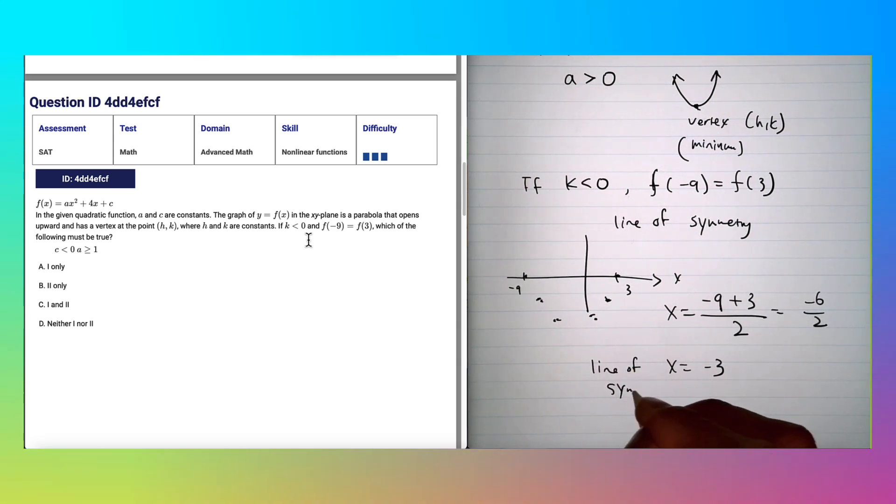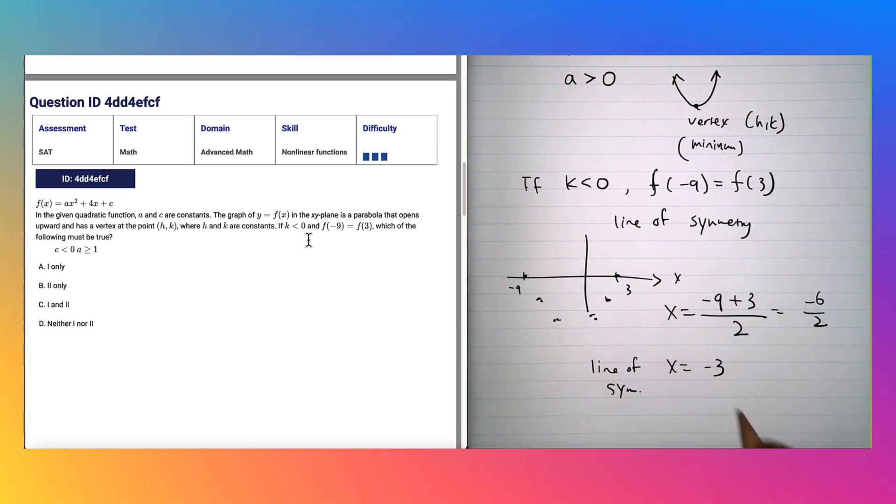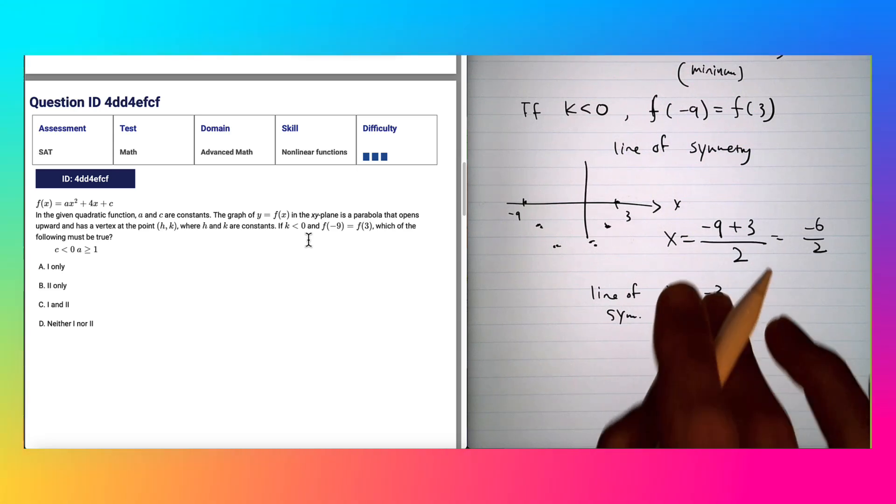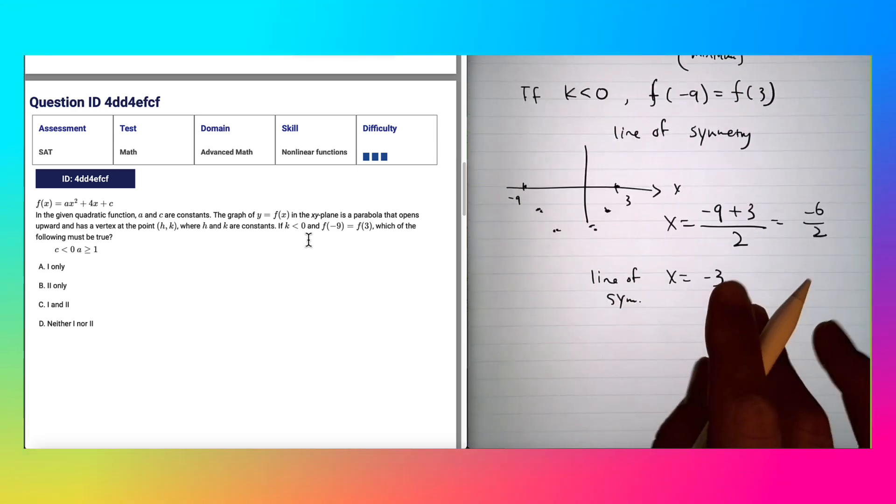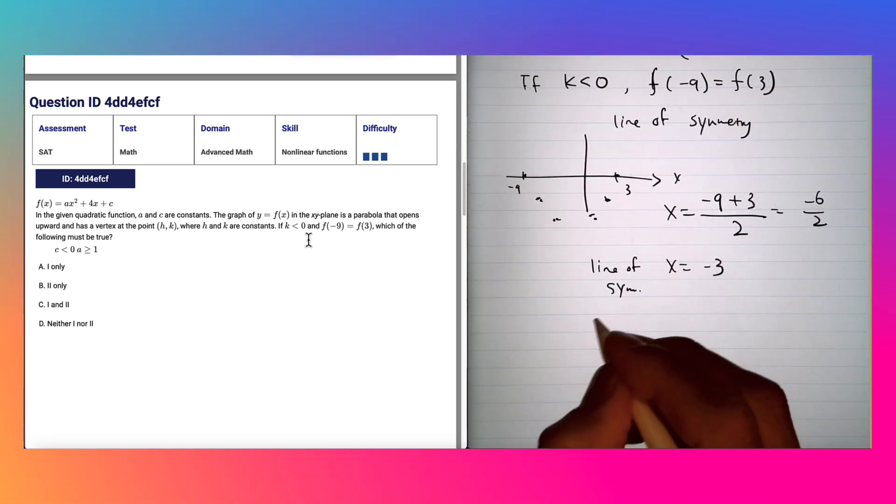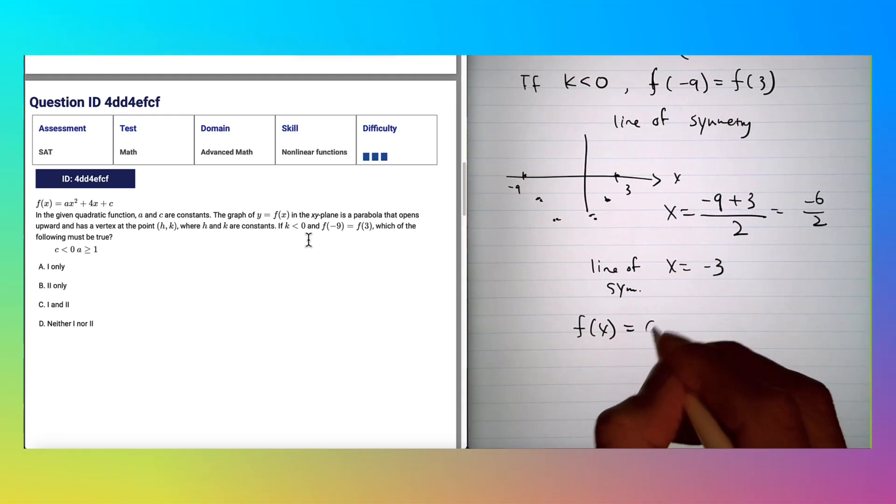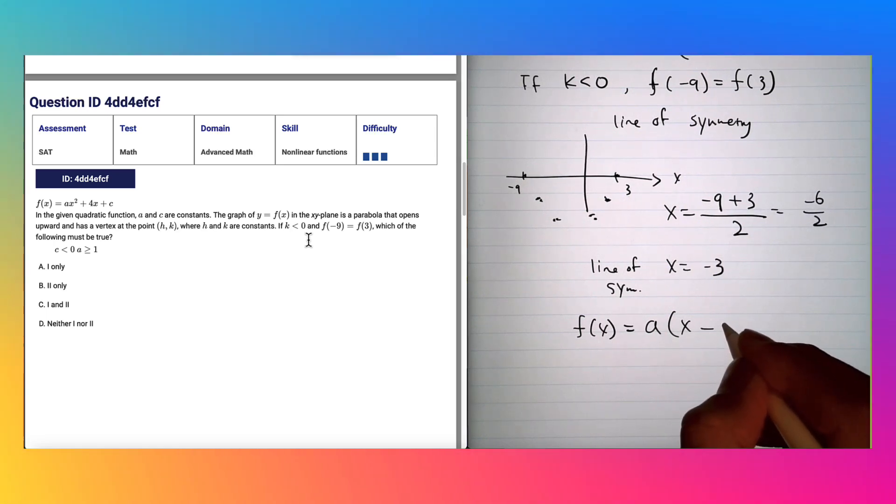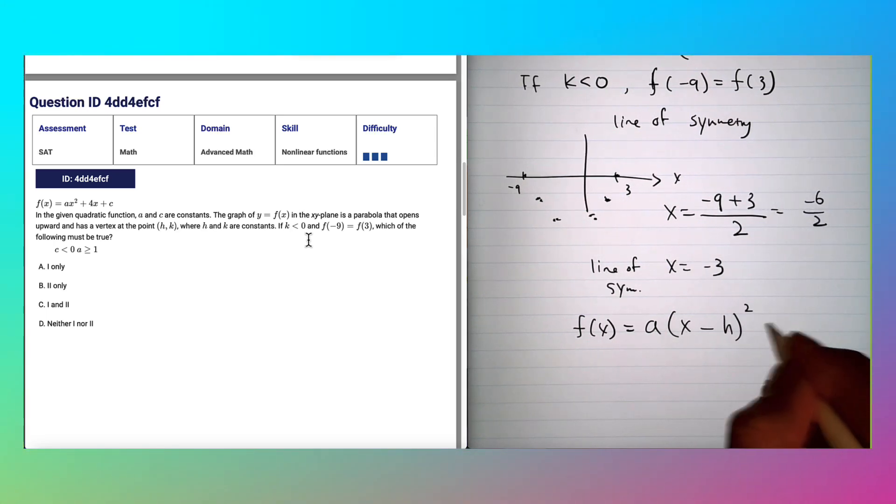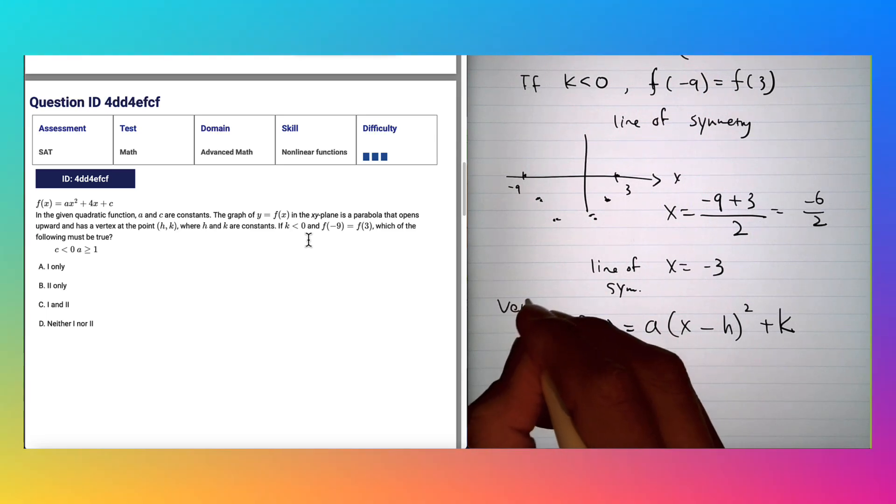Now we know that we can go back to the vertex form of quadratic function, so that is f(x) = a(x - h)² + k. This is the vertex formula you need to be aware of.